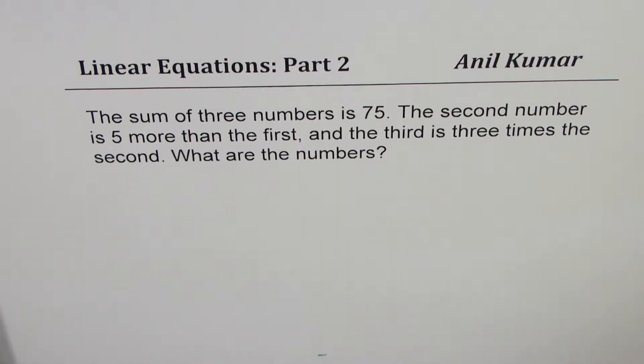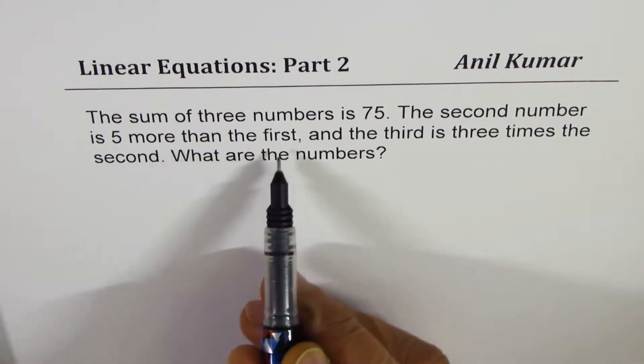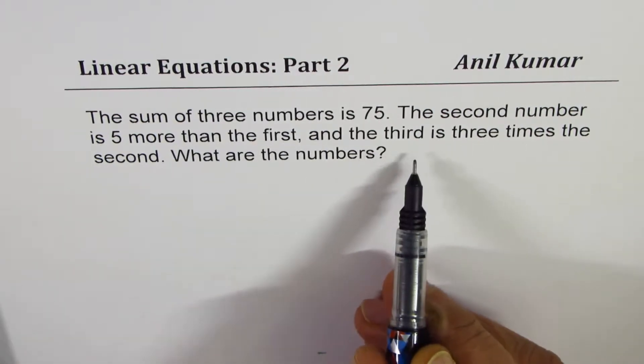I'm Anil Kumar sharing with you a few word problems based on linear equations. The problem in this video is: the sum of three numbers is 75. The second number is five more than the first, and the third is three times the second.